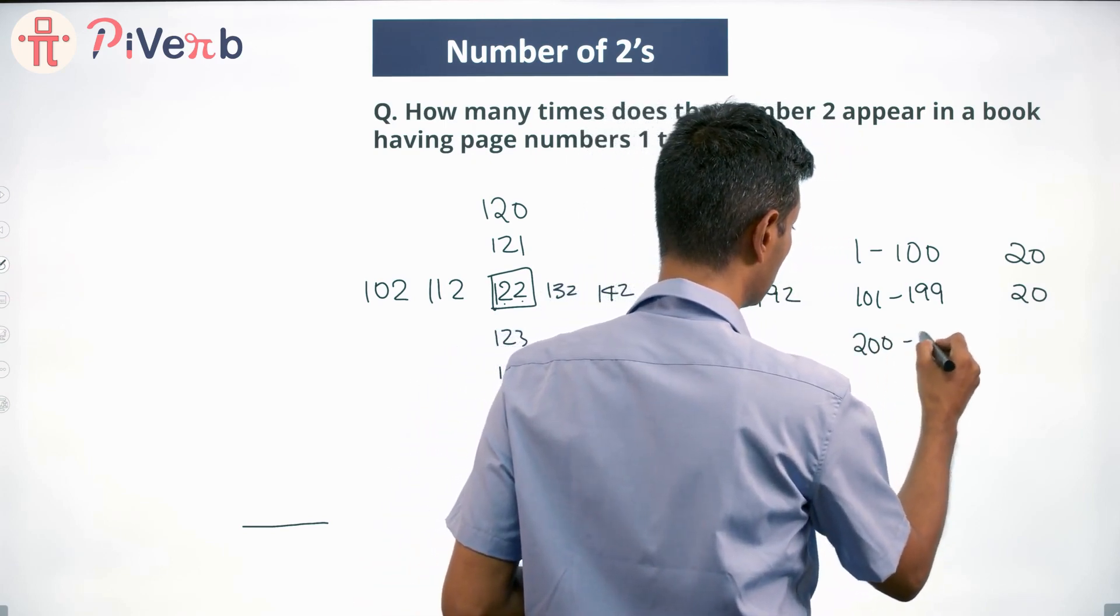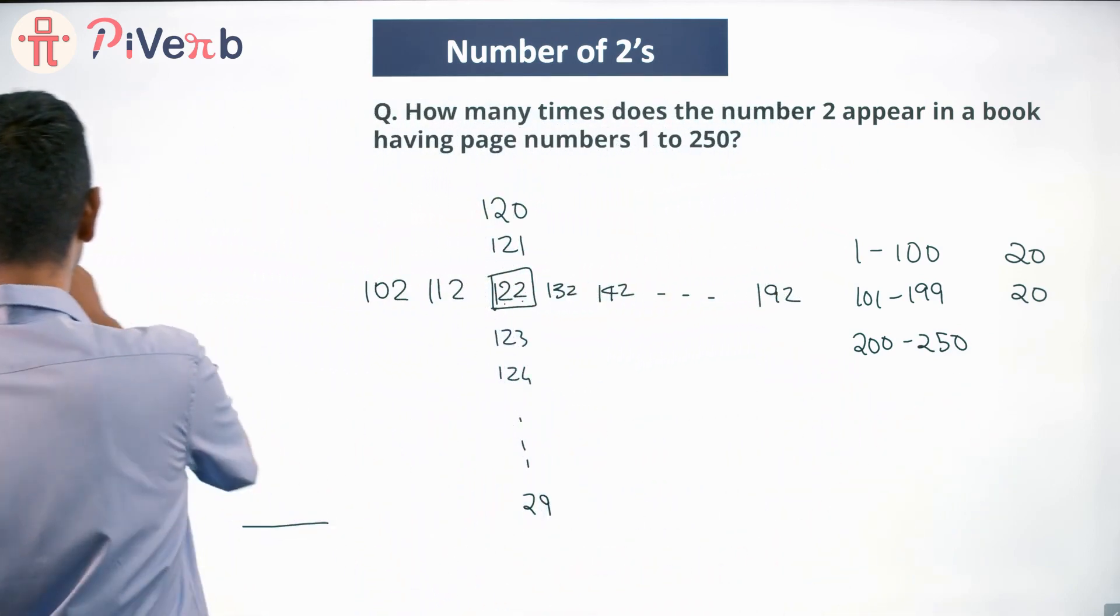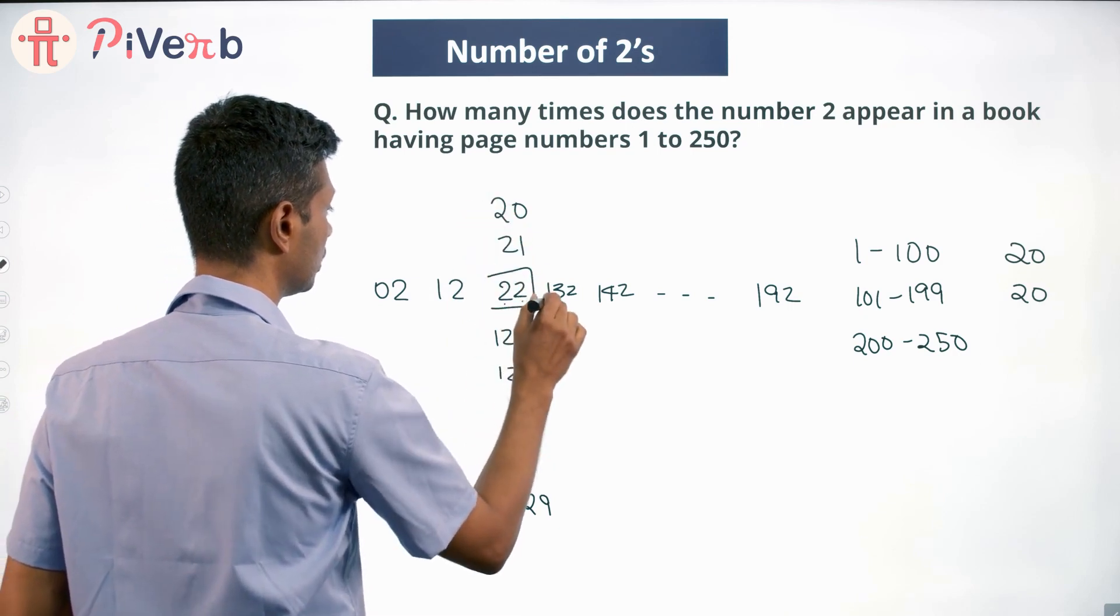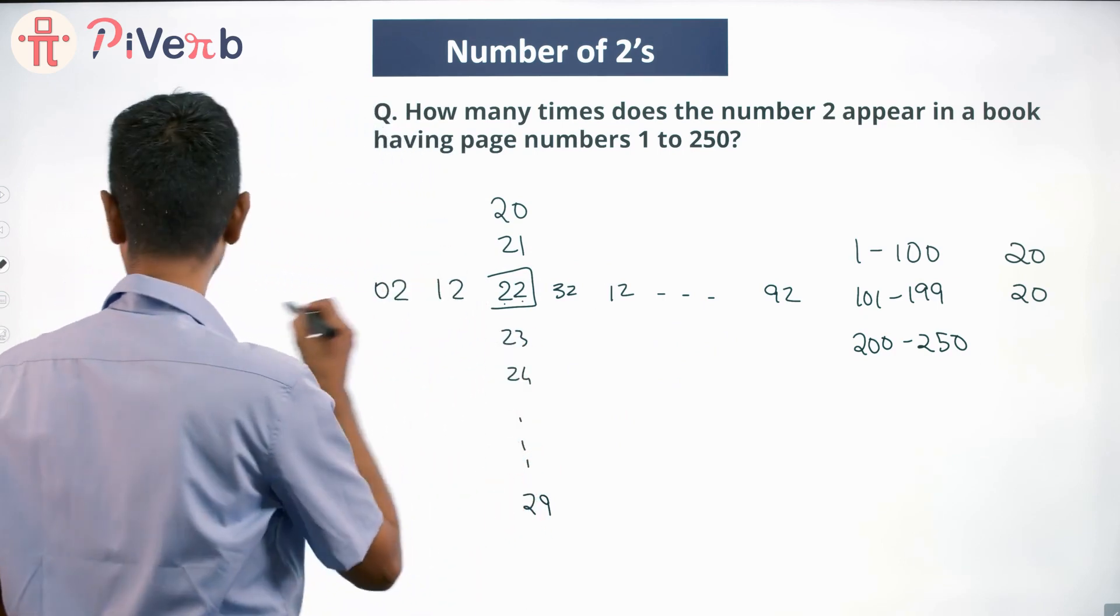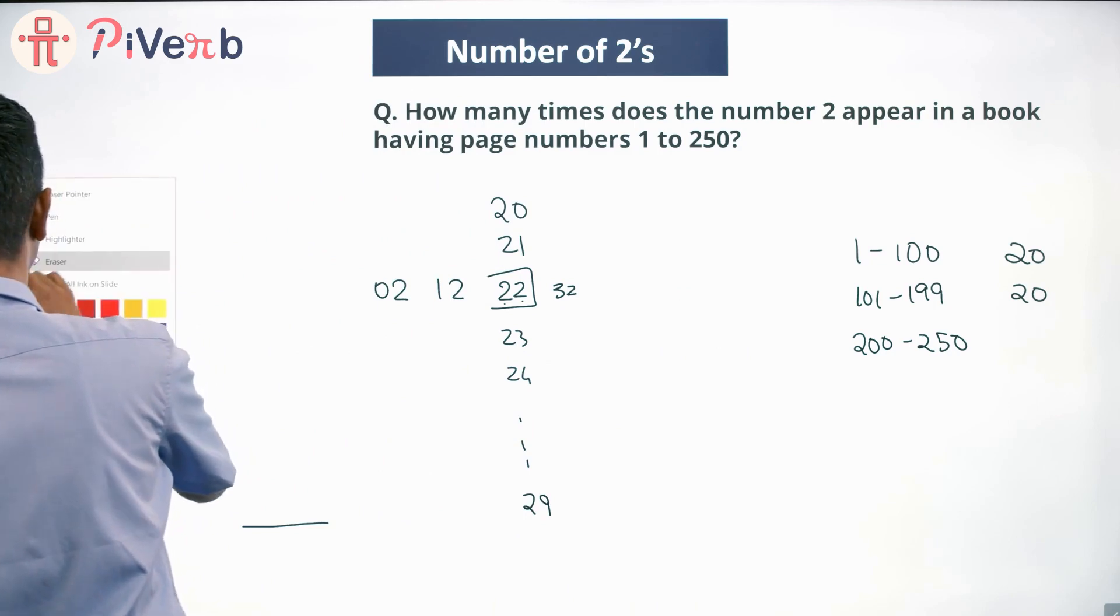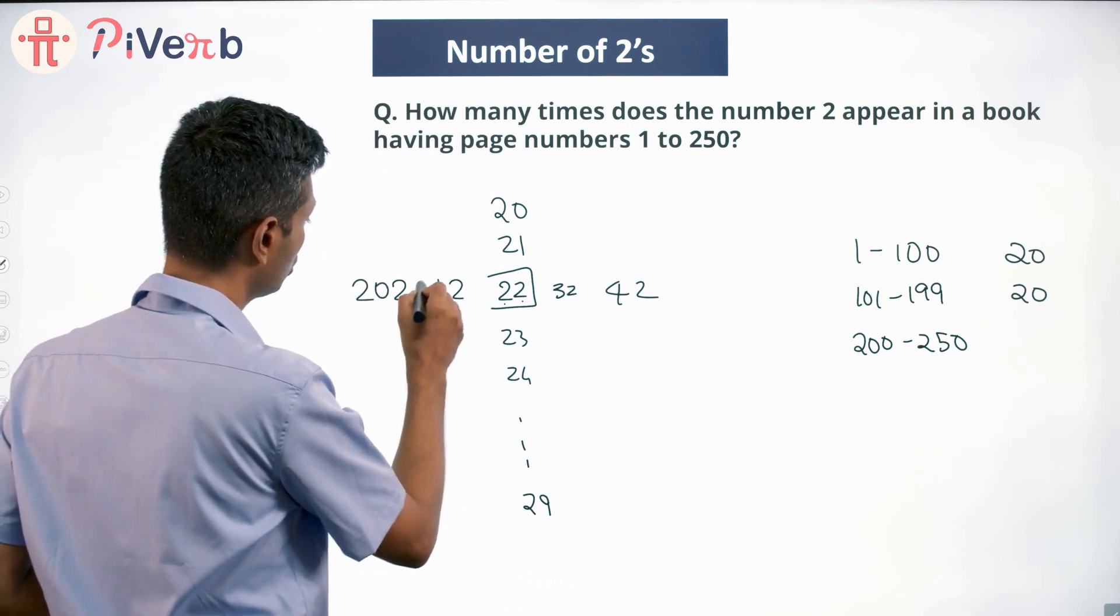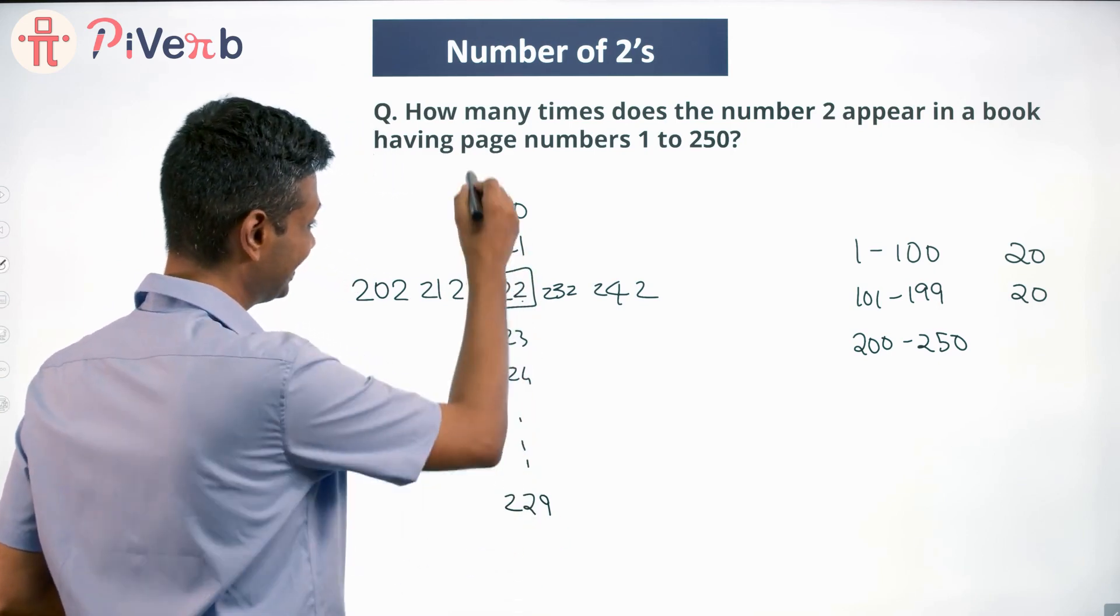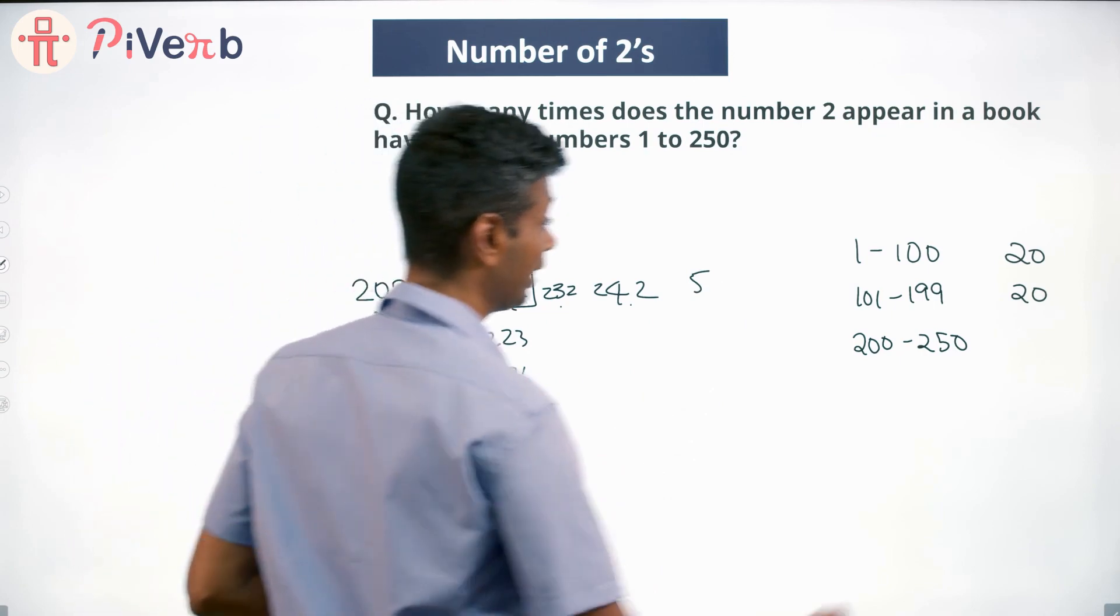Now if I can crack 200 to 250, we are done. From 32 we'll have only 42, even 52 won't come. So 202, 212, 222, 232, 242, 202, 212, 222. These 10 will feature. This time we'll have 1, 2, 3, 4, 5. So 200 to 250 it will appear 15 times.